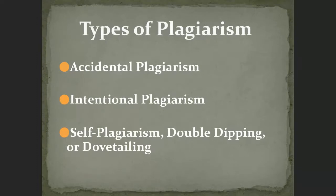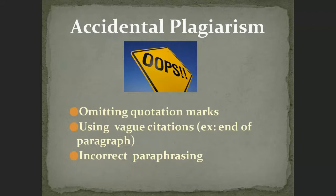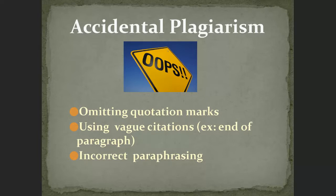Accidental plagiarism happens when people omit quotation marks, forget to include a citation, or paraphrase a quote incorrectly — which is technically academically dishonest because you're changing what's being said. The best way to make sure this doesn't happen is: if you use a quote from another source, use quotation marks, use citation, and tell me where the source came from. Intentional plagiarism is purposely eliminating a citation from information that comes from another source, or using an incorrect citation so I can't locate the original source.